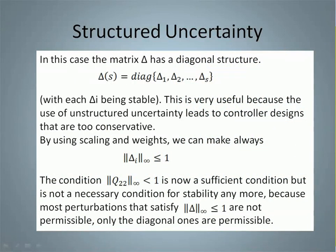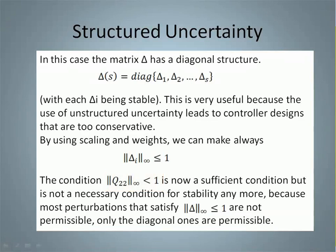Now we have the case of structured uncertainty. Here the matrix delta has a diagonal structure, where each diagonal element can be a stable transfer matrix or scalar. By using scaling and weights we can make each element of delta have an H-infinity norm less than or equal to 1. For structured uncertainty there is a problem: if we design a controller K to satisfy H-infinity norm of Q_22 less than 1, we will get a very conservative and possibly impractical controller, because this condition is sufficient but not necessary for stability with structured uncertainty — most perturbations satisfying it are not permissible; only the diagonal ones are.